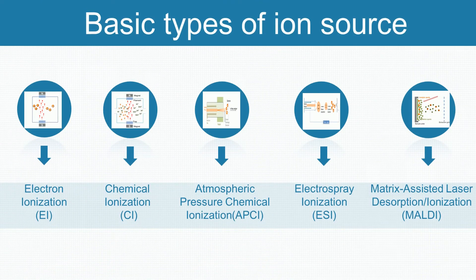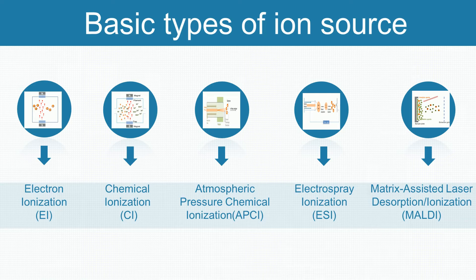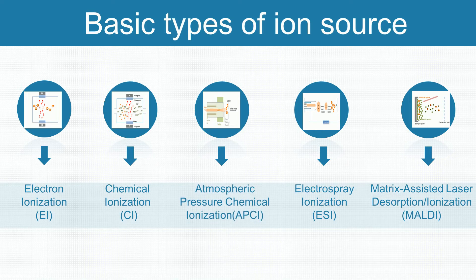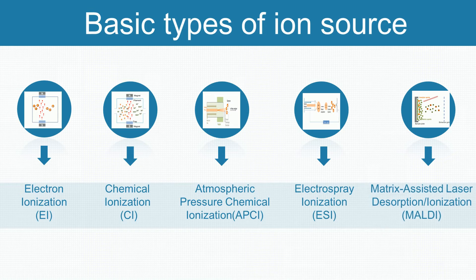Today, we are going to introduce some basic types of ion source, including electron ionization, chemical ionization, atmospheric pressure chemical ionization, electrospray ionization, and matrix-assisted laser desorption ionization.